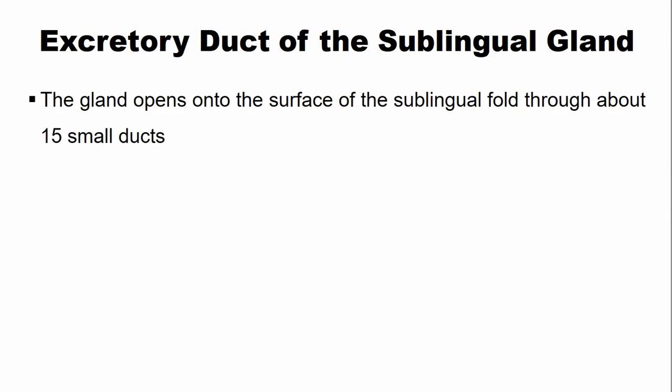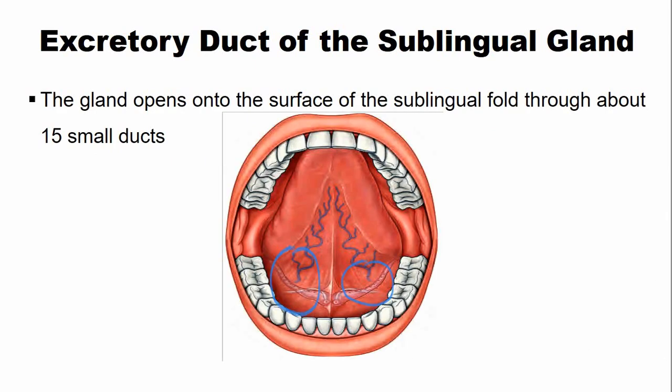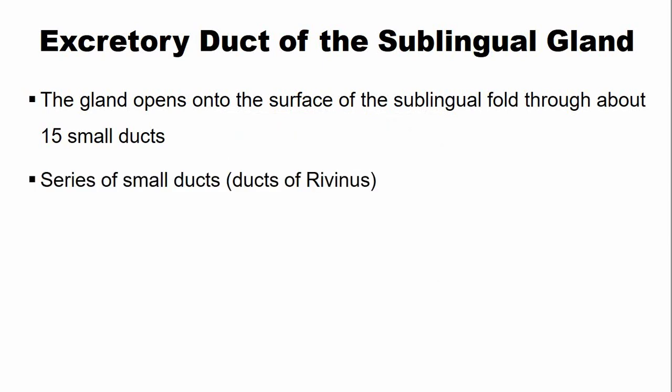The excretory ducts of the sublingual gland usually open on the surface of the sublingual fold through about 15 small ducts, as you can see in this picture. This series of small ducts is known as the ducts of Rivinus.